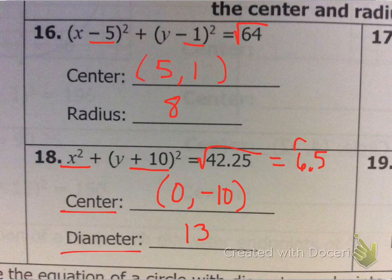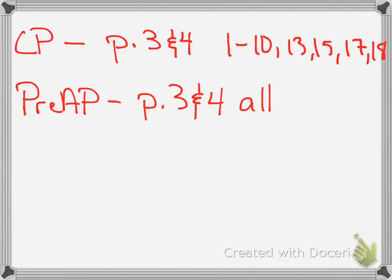All right, so that's pretty much it, guys. The challenge one, let's see if some of y'all can come up with that. But you've got this, you've got everything that you need right there. Let's kind of go from there and see what y'all can do. So, here is the assignment. So, again, so what you need to make sure is you're doing these problems. For the CP, you're doing 1 through 10 on pages 3 and 4. 1 through 10, 13, 15, 17, and 18.